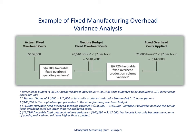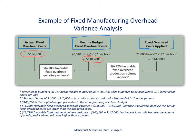We are going to work from left to right with this fixed manufacturing overhead variance analysis. On the left, the actual fixed overhead costs amounted to $136,000. In the middle column, the flexible budget for fixed overhead costs amounts to $140,280 — there are footnotes below where those numbers come from. On the far right, fixed overhead costs applied to products totaled $147,000, with overhead applied based on direct labor hours, as shown in the footnotes.